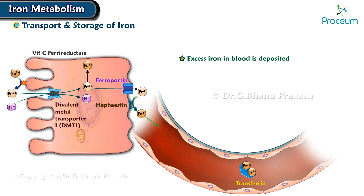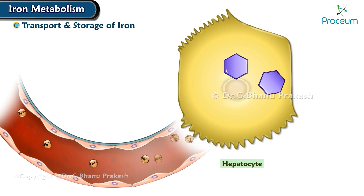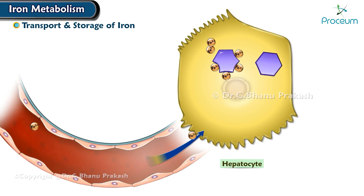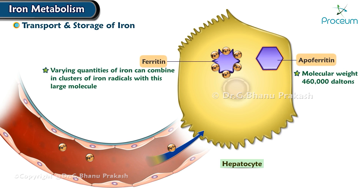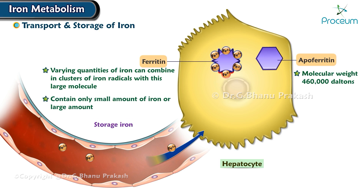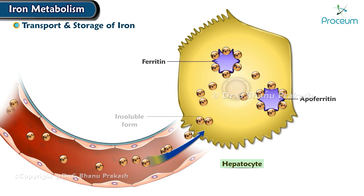Excess iron in the blood is deposited especially in the liver hepatocytes and less so in the reticuloendothelial cells of the bone marrow. In the cell cytoplasm, iron combines mainly with the protein apoferritin to form ferritin. Apoferritin has a molecular weight of about 460,000 daltons, and varying quantities of iron can combine in clusters of iron radicals with this large molecule. Therefore, ferritin may contain only a small amount of iron or a large amount. This iron stored as ferritin is called storage iron.